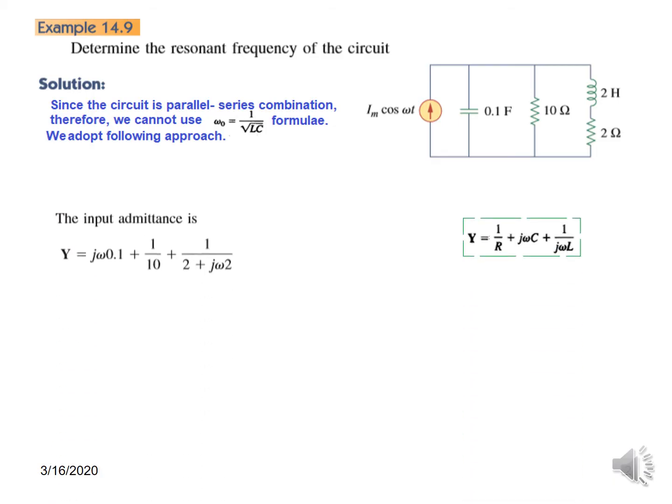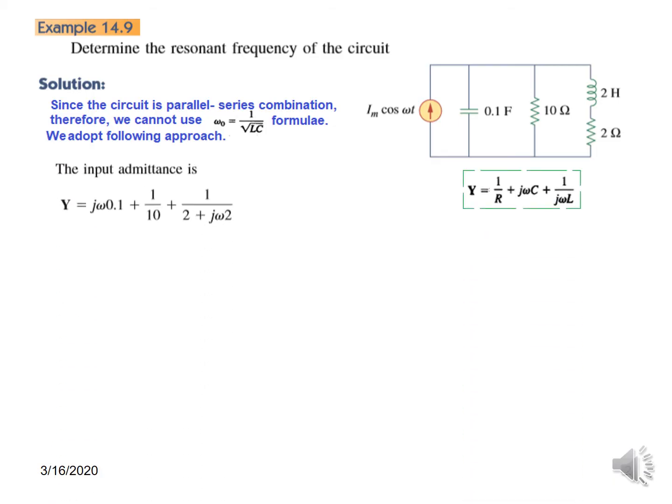Let's write the input admittance Y. If you recall, this was the formula we found in the previous video in the parallel circuit: Y equals jωC plus 1 over jωL.